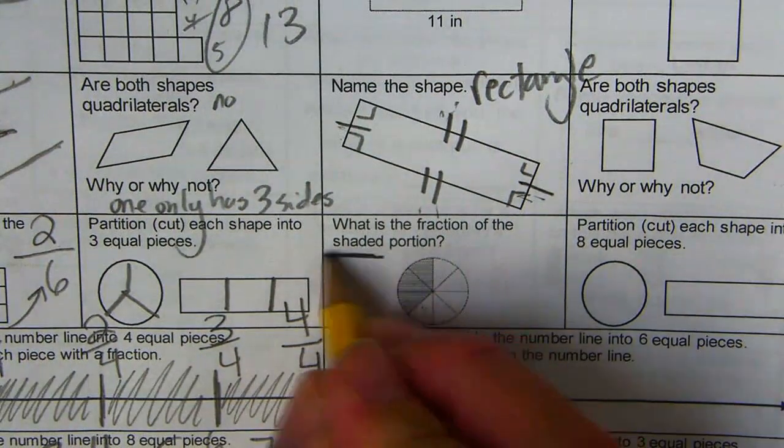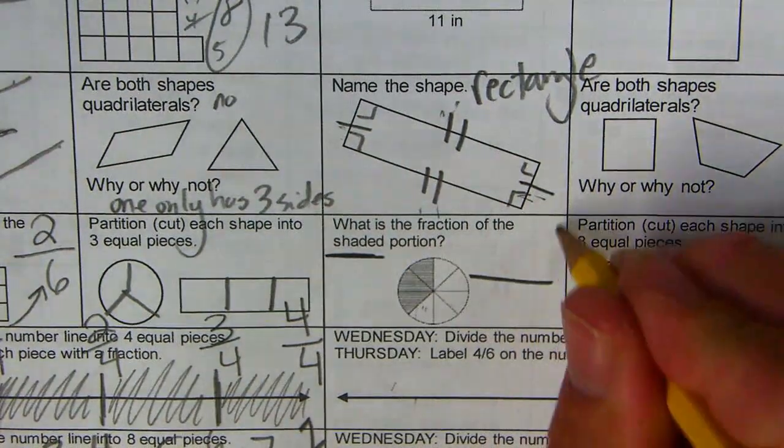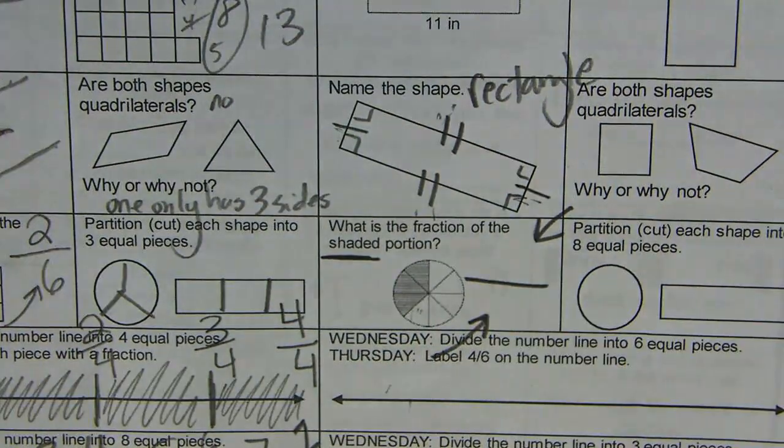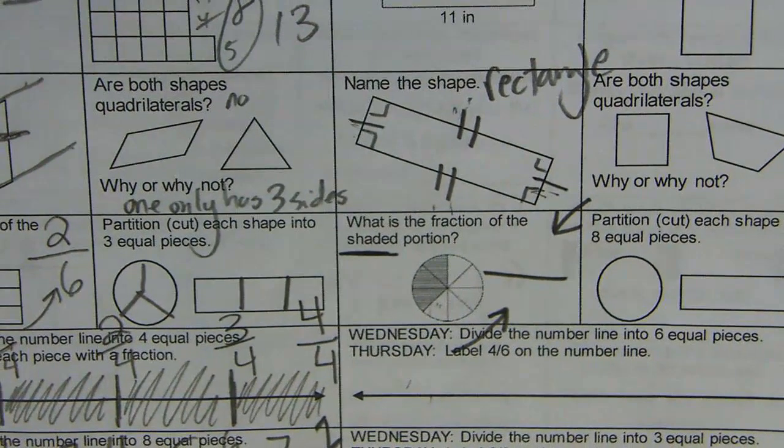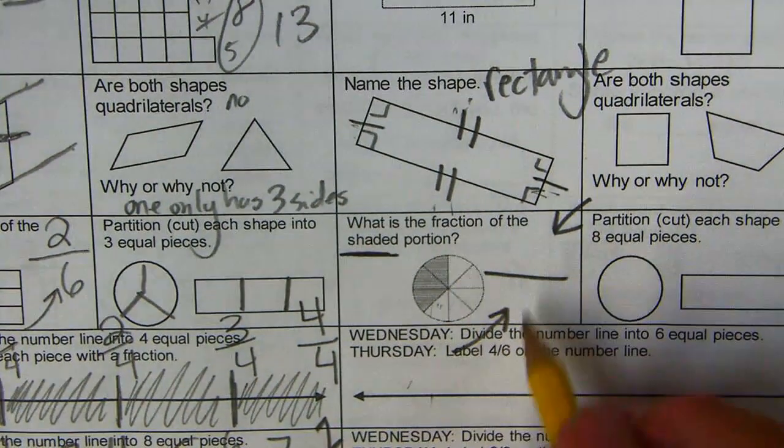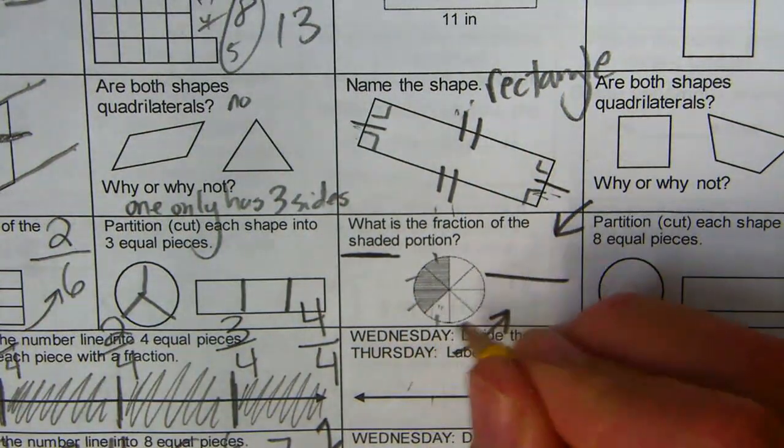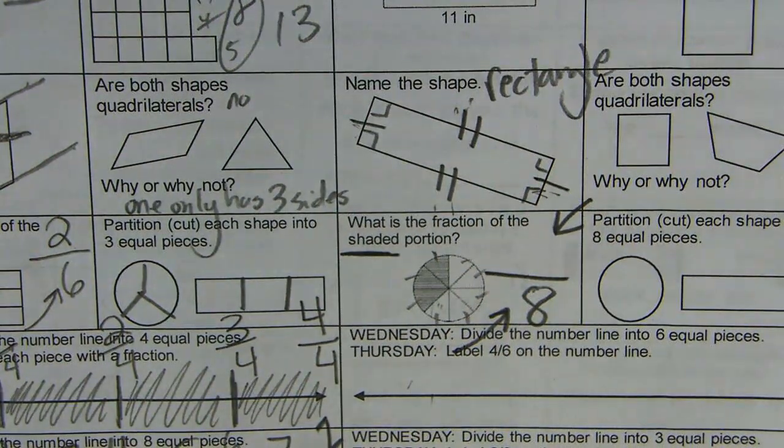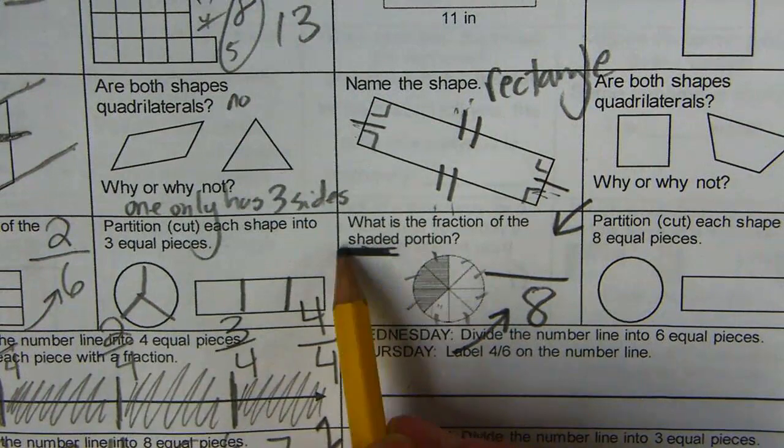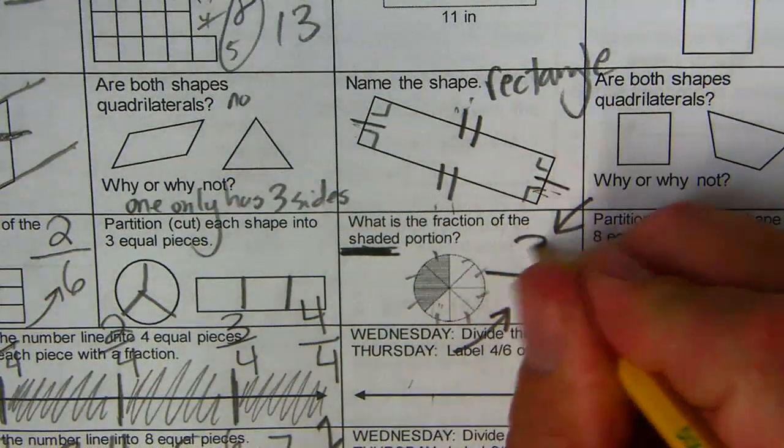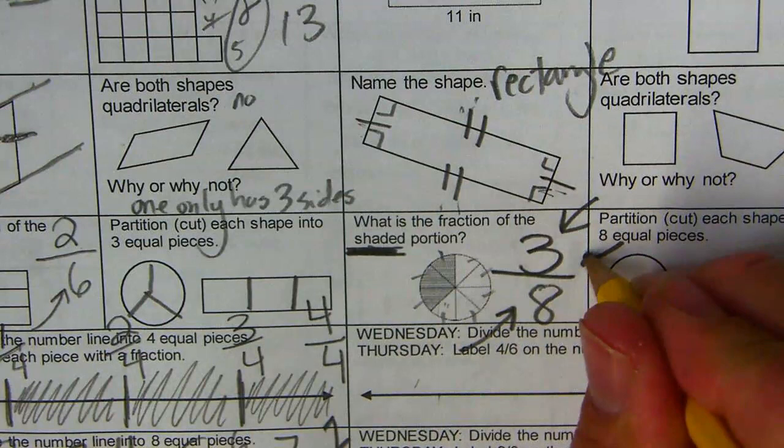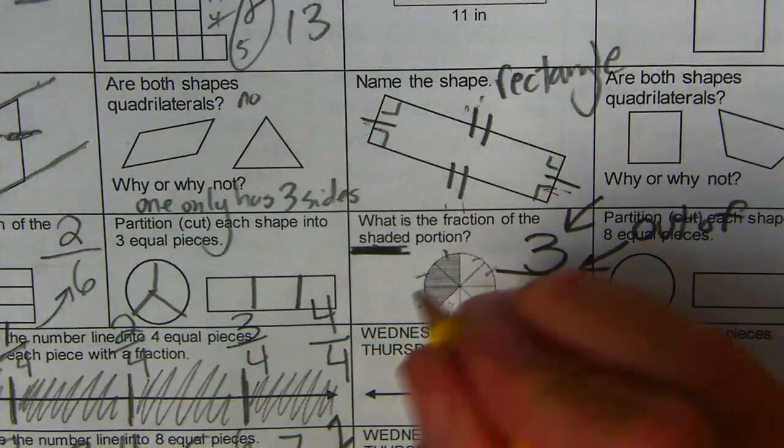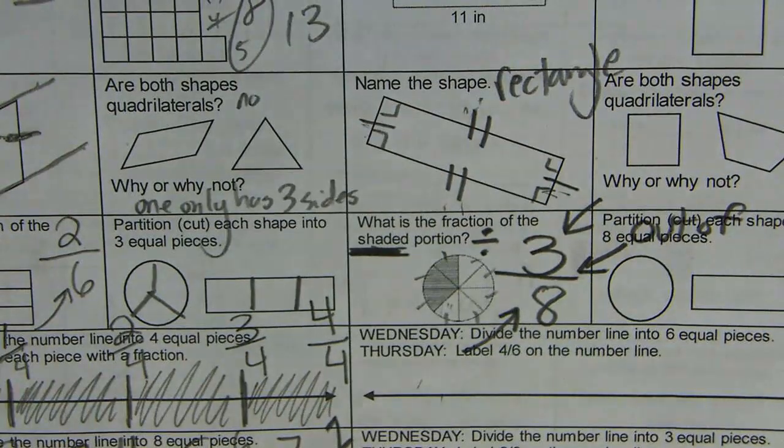Okay, what is the fraction of the shaded portion? Notice it tells us what we're going to be naming. The top part is what we're naming or counting. The bottom number, the denominator, is how many equal parts make up the whole. So one, two, three, four, five, six, seven, eight. Eight equal parts make up the whole. How many parts are we counting? The shaded parts: three. Three. The line here can mean out of, or it can mean divide. Three out of eight, or you could say three eighths.